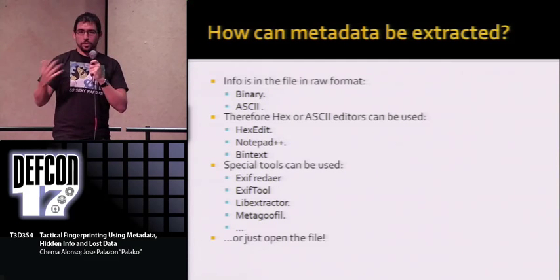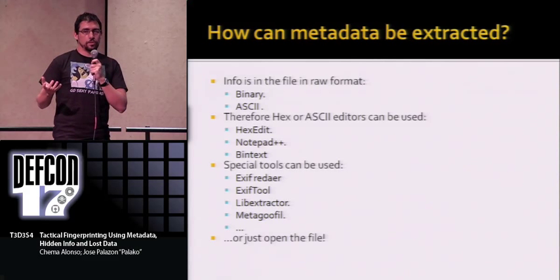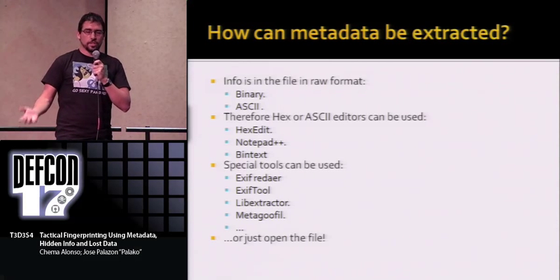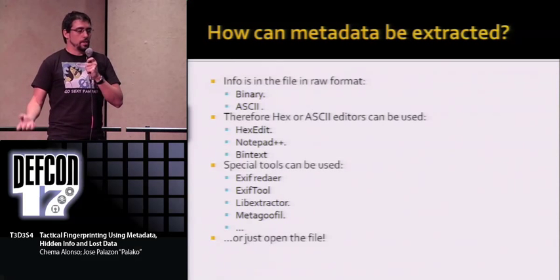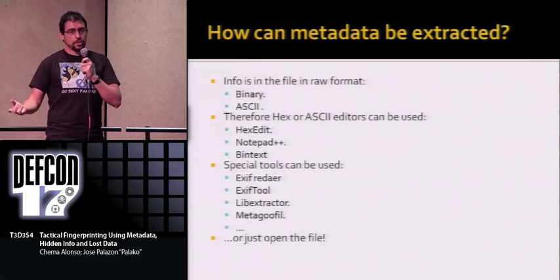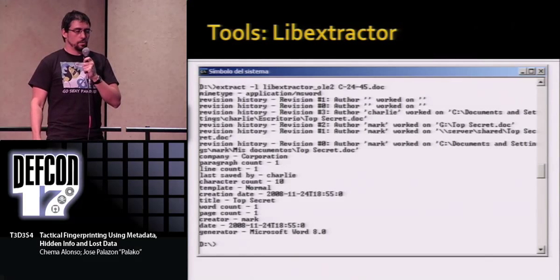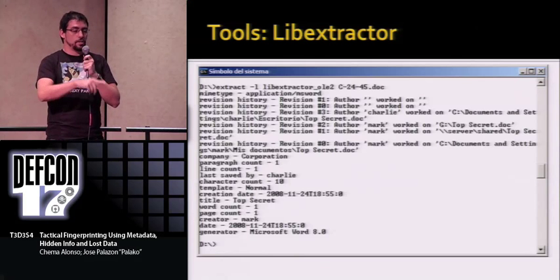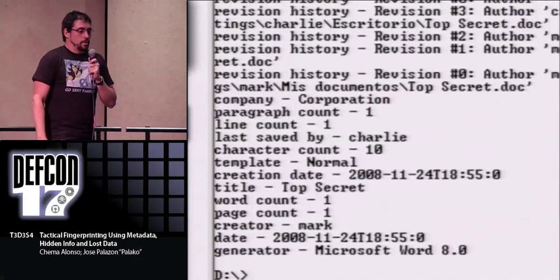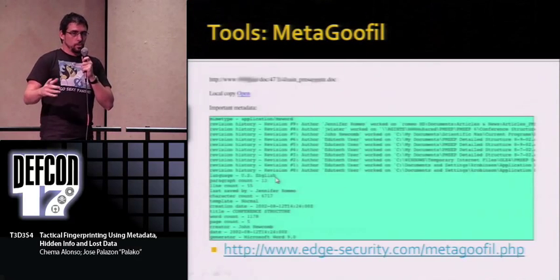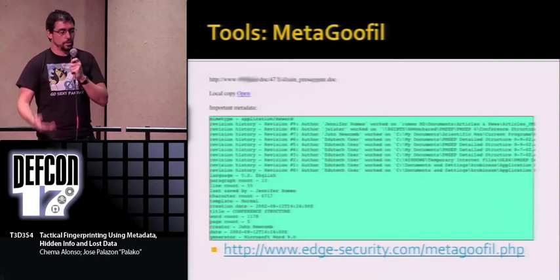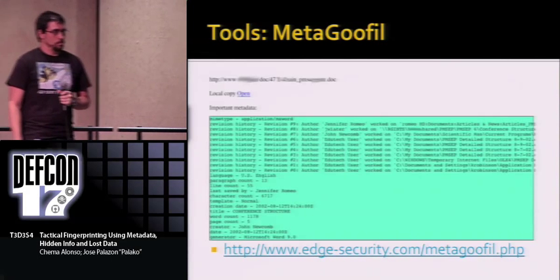How can you extract this metadata? Just look into it. Most of the time it's strings, sometimes binary — you can open a hex editor and see the raw hexadecimal. Tools like exedit or BinText help with that. Or you can use specialized tools like EXIF readers for images, or Livextractor, which takes Office documents and reads the information. You can also use Metagoofil, which takes a domain, searches Google, downloads all files, uses Livextractor, and presents you the information. It was created by another Spanish guy, so it's great.